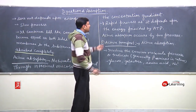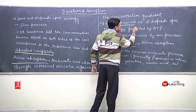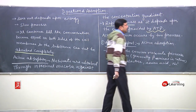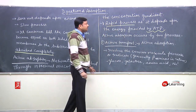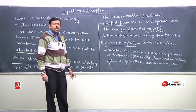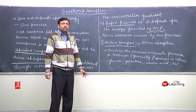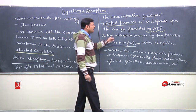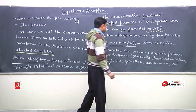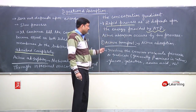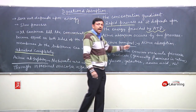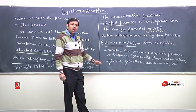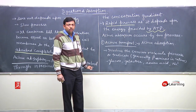Active absorption is a rapid process as it depends upon the energy provided by ATP. Active absorption occurs by two processes: number one, active transport. Active transport is a type of active absorption that involves carrier molecules.